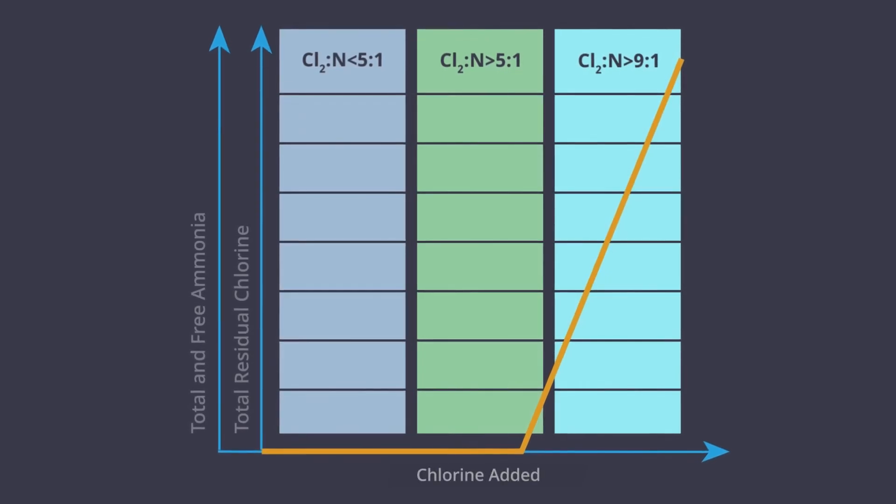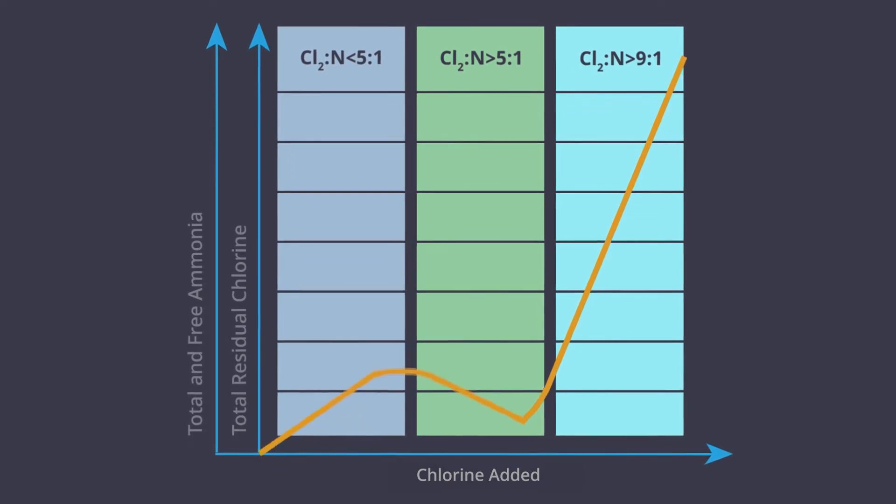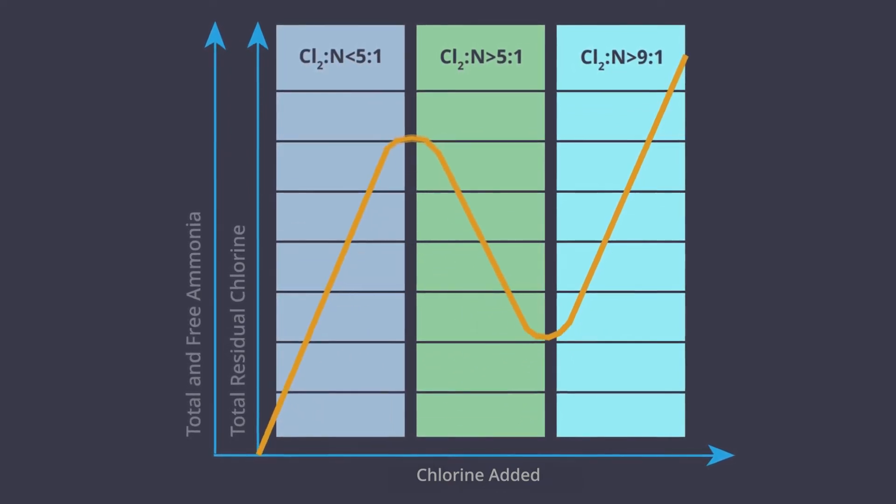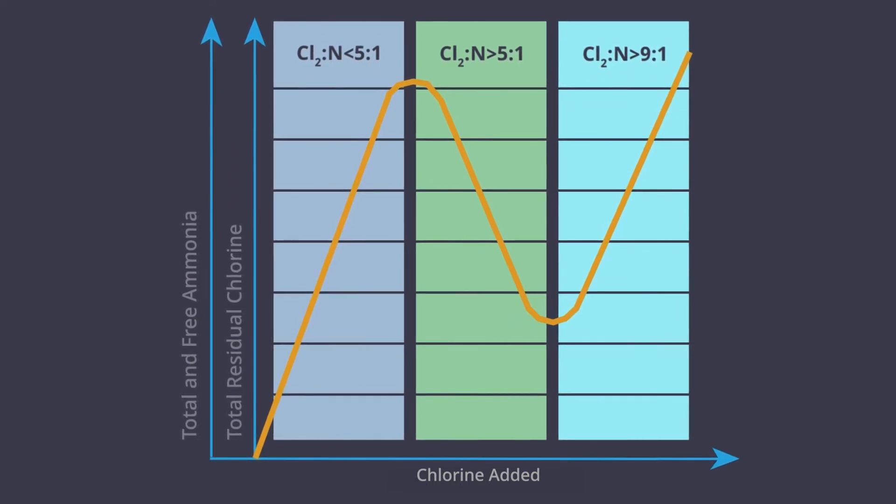When ammonia is used by chloraminating systems, our graph changes, pushing up the amount of matter the chlorine has to bond with initially. This creates what is known as the chloramination and or breakpoint chlorination curve.